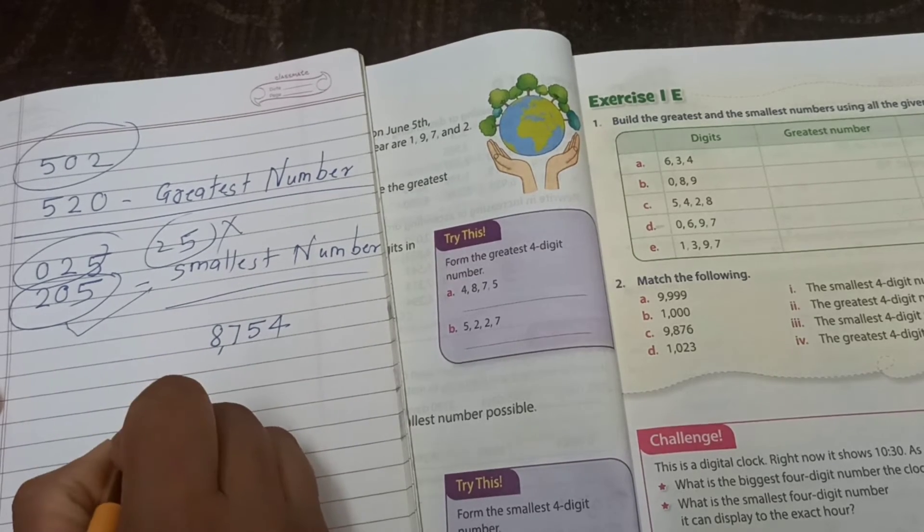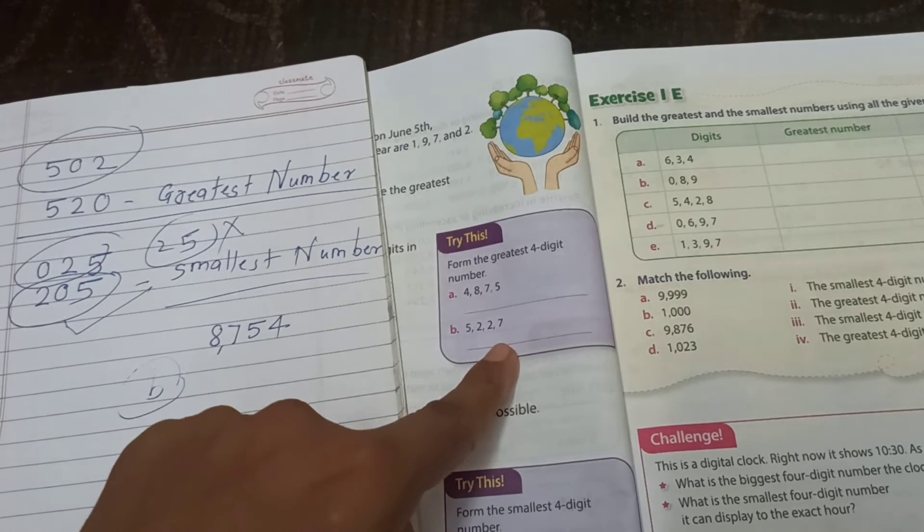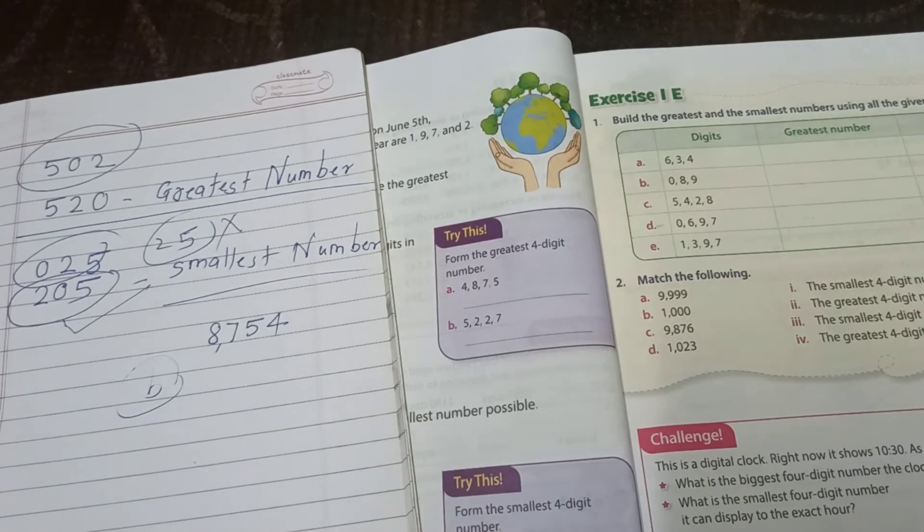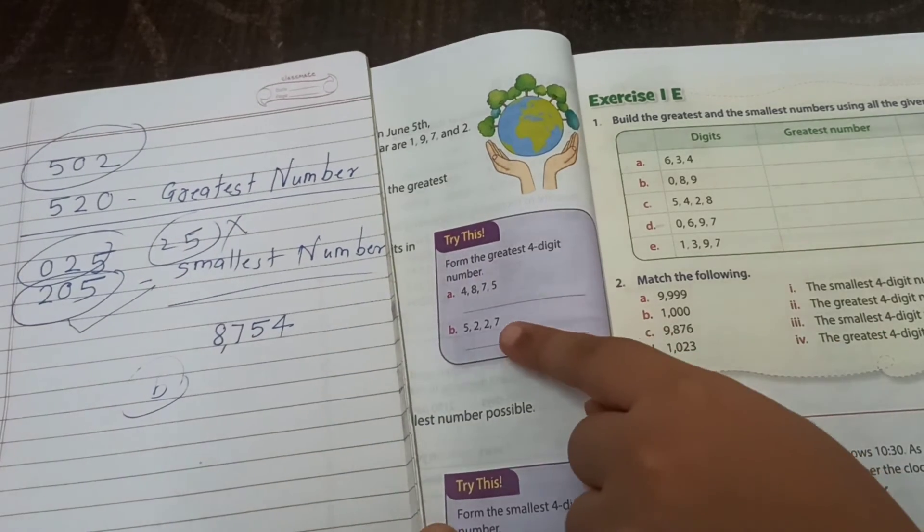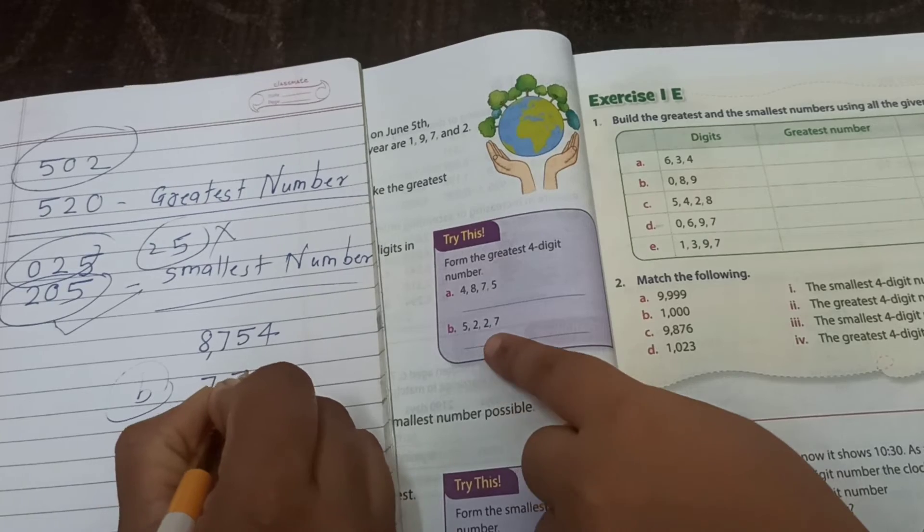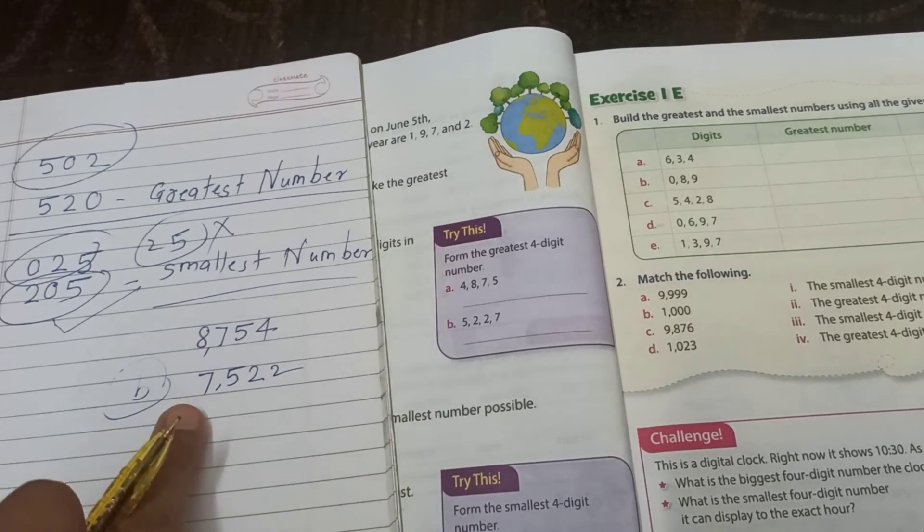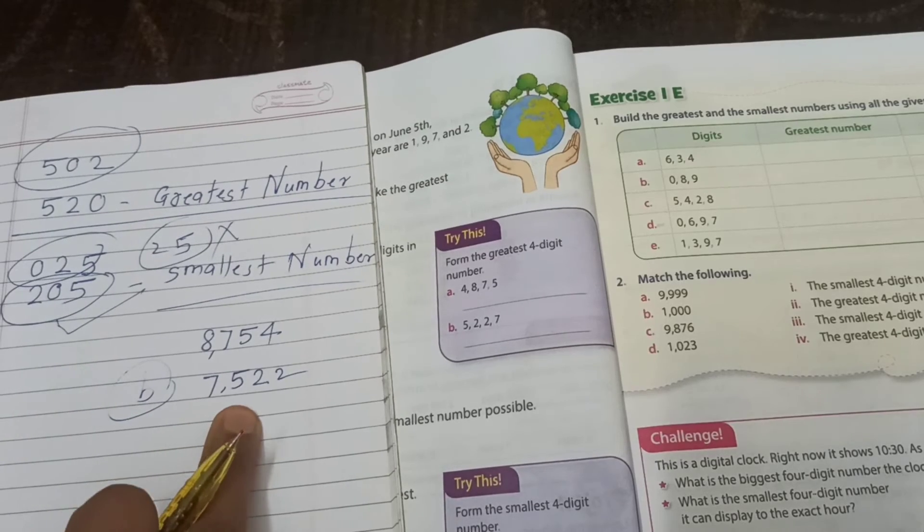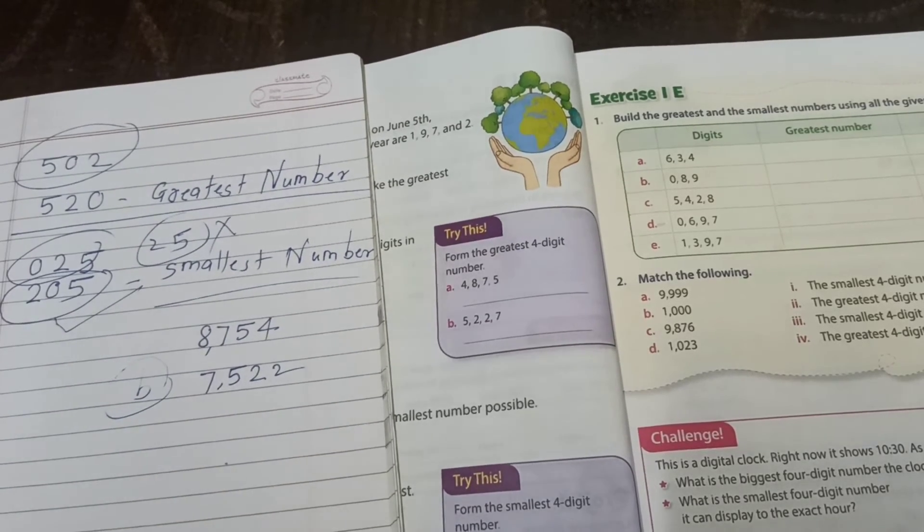Parnavi next, B number. Yes, 5, 2, 2, 7. Tell us greatest number. 7, 5, double 2. Means we got 7522. Very good.